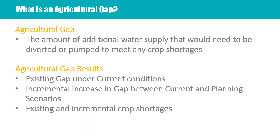Each basin, basin roundtables, or stakeholders can really decide what piece of information they want to plan to — whether to plan just to the incremental gap number or to start addressing the existing agricultural gap that producers live with today. In addition, we are going to provide the existing and incremental shortages at the crop level. This would be a comparison from the SWSI 2010 efforts and also what we felt is relatively important — providing those crop shortages because it is really looking at a production level and potentially a financial level, how much less agricultural product is the state producing under each of these scenarios.